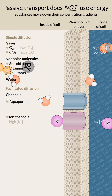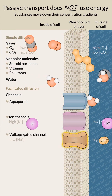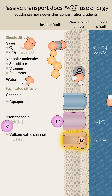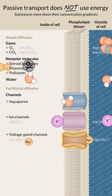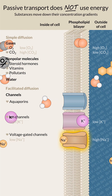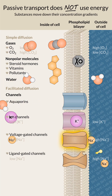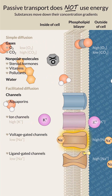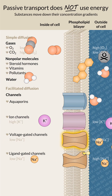Ion channels can also be gated, meaning that they open and close. Voltage-gated channels open in response to a voltage difference between the inside and outside of the cell membrane. Ligand-gated channels open when another chemical attaches to and opens the channel.